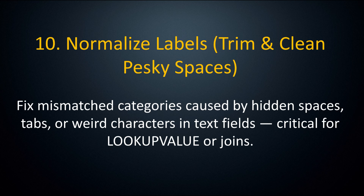The last of the 10 explained functions is normalize labels: this function fixes mismatched categories caused by hidden spaces, tabs, or weird characters in text fields — critical for lookup values or joins.